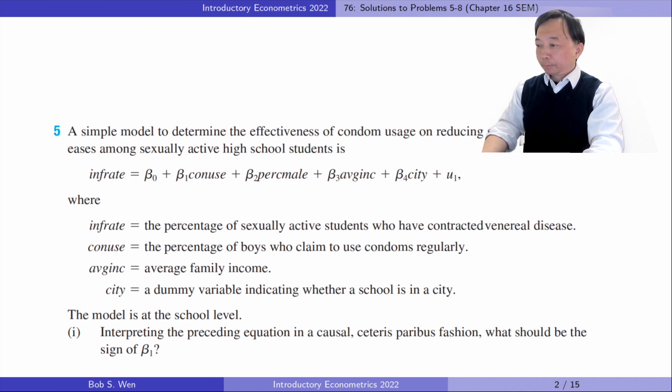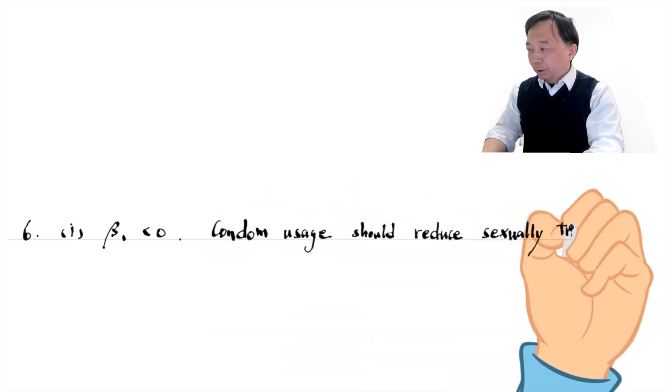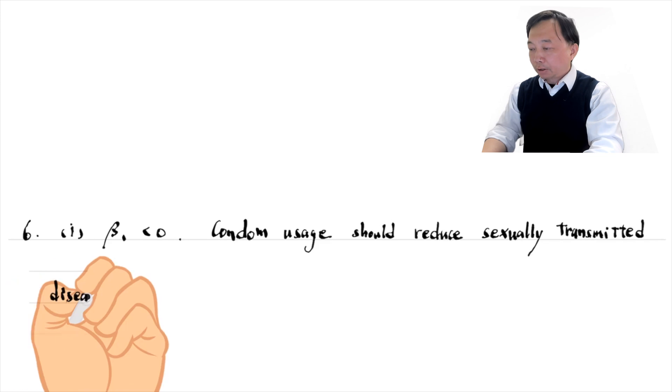Let's do Problem 5. A simple model to determine the effectiveness of condom usage on reducing sexually transmitted diseases among sexually active high school students. The model is at the school level. In part one, interpreting the preceding equation in a causal ceteris paribus fashion, what should be the sign of beta one? Beta one should be negative. Condom usage should reduce sexually transmitted diseases, holding other factors fixed.